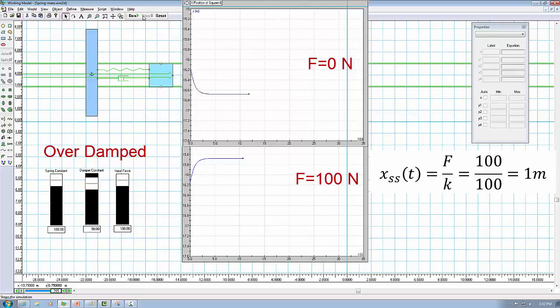This again proves the motion is determined by the system parameters, which means the spring, mass, and damper, but not by input. And if we check the steady-state solution, the one with force is again one meter to the right compared to the one without any force.